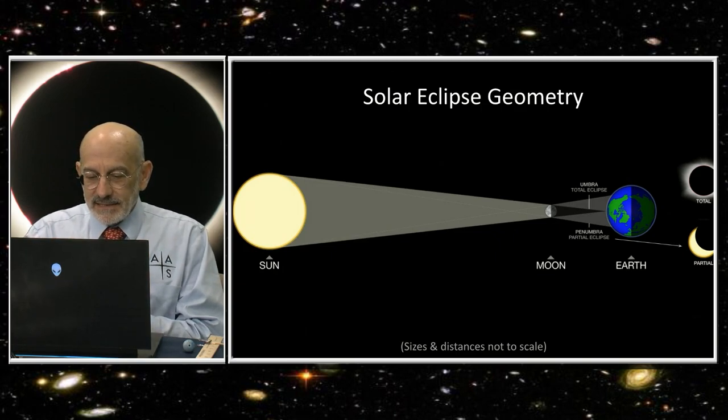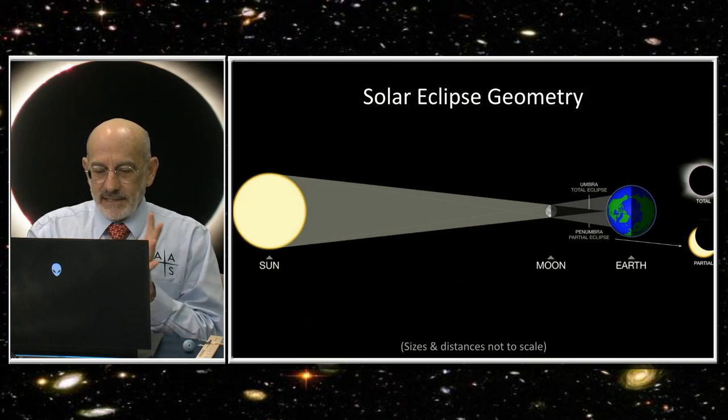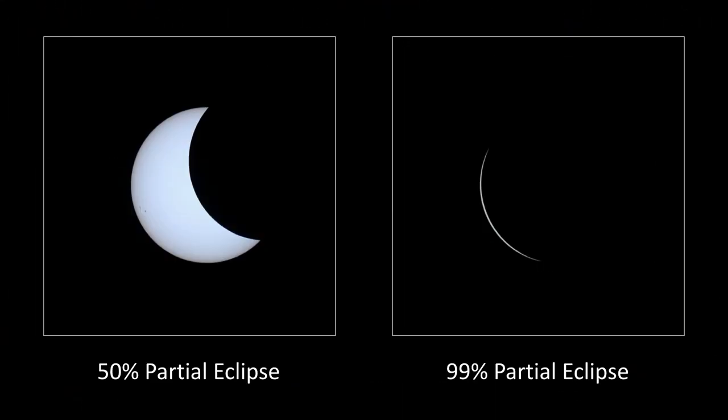When the moon casts its shadow, it's casting the dark inner shadow within which the entire sun is blocked, and then on either side of it is the penumbra, which is the part of the shadow where the sun is partially blocked. That's the region—it's much wider than the region of the total eclipse—where you see only a partial eclipse.